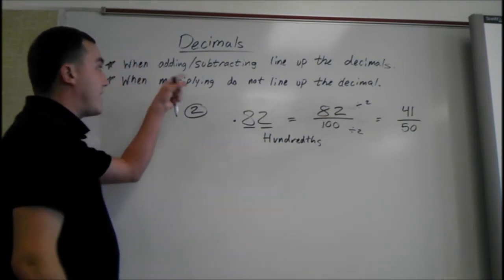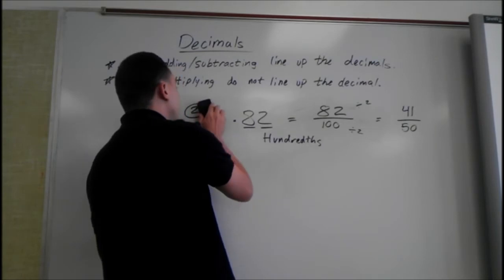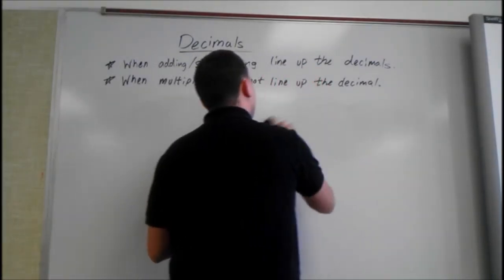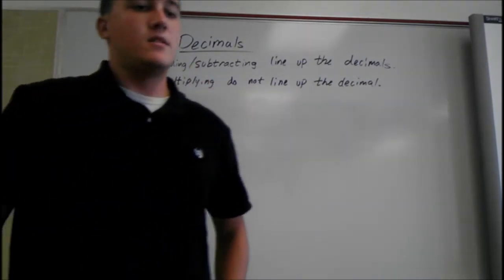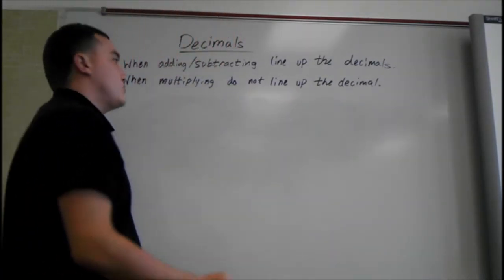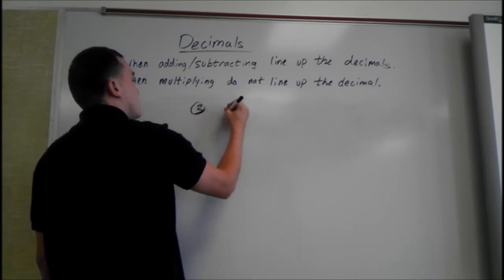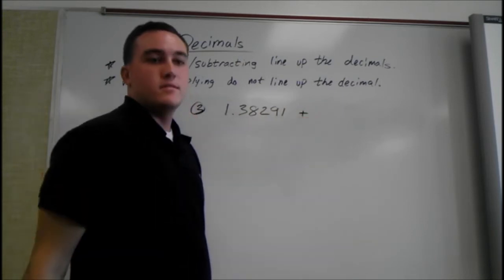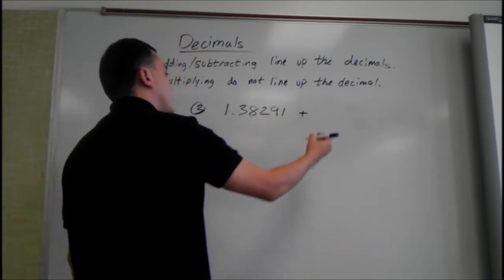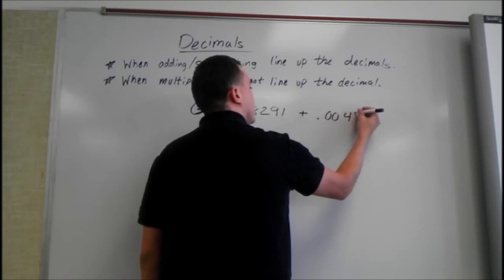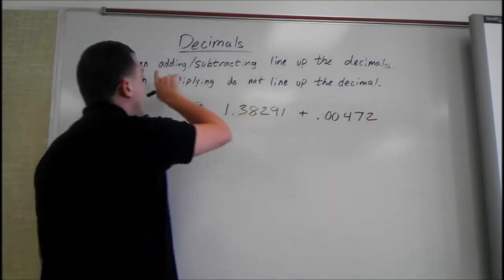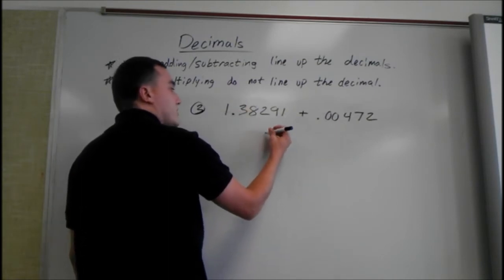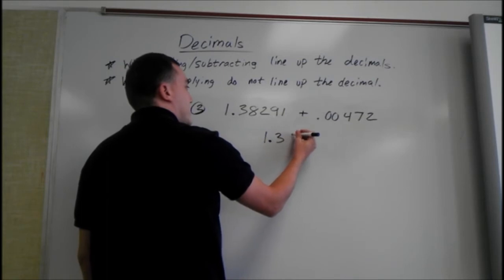Next, we're going to go over adding and subtracting. If we're adding two numbers with decimals, say 1.38291 plus 0.00472. Like it says, when you're adding and subtracting, you have to line up the decimals. It's always better to look at them vertically. So we're going to put one on top of the other.